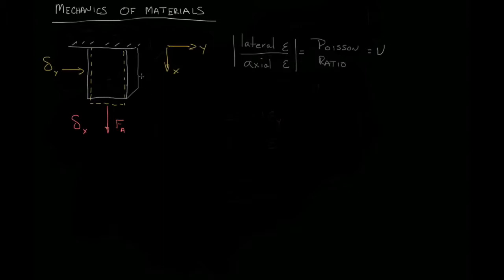Today, I'd like to take a look at our beam. We know that it's being stretched in the x direction, and we know it's contracting in the y direction due to our Poisson ratio. However, we're going to apply a secondary force. We'll call it force B, and I want to know how do we think about what's happening on the beam.